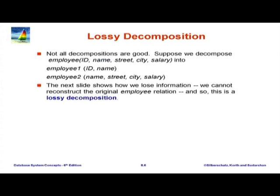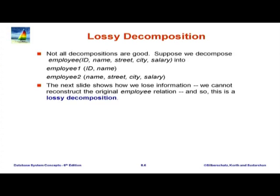Given this dependency, in the combined relation inst_dept, department name is unfortunately not a candidate key—we are allowed to have two different tuples with the same department name. If that happens, building and budget are going to get repeated. So the functional dependency shows what is wrong with the original schema: there is such a dependency, and department name is not a candidate key—it can appear more than once—so there is a problem. The solution is to decompose. The decomposition we are already familiar with is instructor and department. This decomposition was good. On the other hand, there can be bad decompositions. Let us take a slightly extended version of the employee relation—we had ID, name, and salary; let us add street and city.